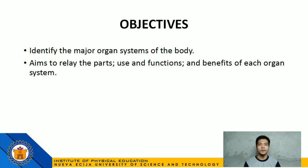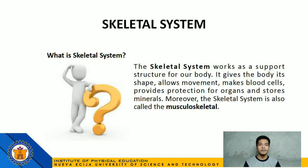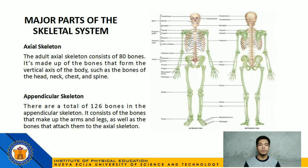First on the list is the skeletal system. The skeletal system works as a support structure for our body. It gives the body its shape, allows movement, makes blood cells, provides protection for organs, and stores minerals. Moreover, it is also called the musculoskeletal. There are two major parts of the skeletal system: axial and appendicular skeleton.